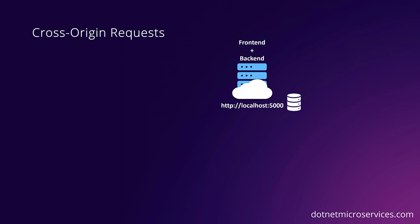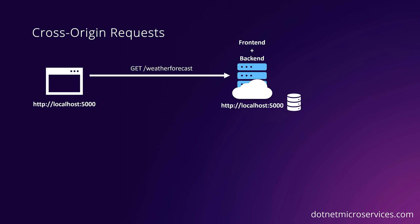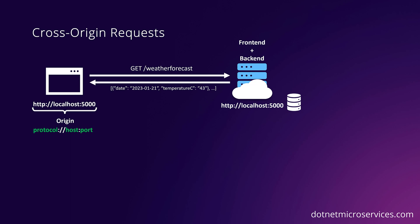Before jumping into the code, let's first understand what a cross-origin request is. Let's imagine that the web server hosting our frontend is also the server that hosts the backend providing data support. The browser navigates to the web server URL to load the frontend, which needs to render some weather data. It makes a GET request to the backend REST API at the same URL. The address from which the browser calls the backend is known as the origin, made of the combination of protocol, host, and port — in this example, HTTP localhost 5000.